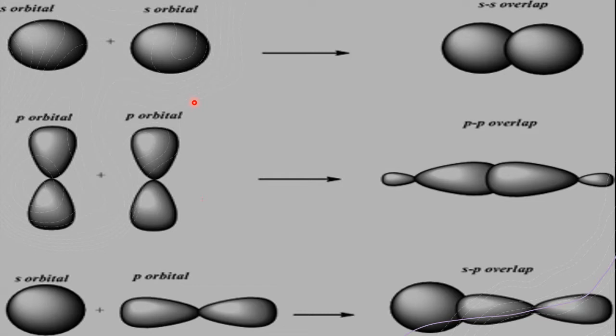In our previous class, we discussed and understood that the main feature of valence bond theory is atomic orbital overlapping. Overlapping means it is falling one over the other, or covering one by the other. That is called overlapping. Here, two atomic orbitals are overlapping. Atomic orbital means the electronic cloud. It is the electronic cloud of the two atomic orbitals which will overlap.